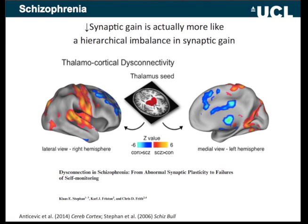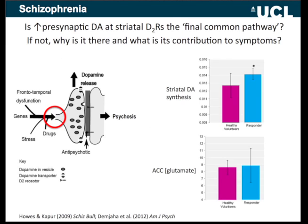It's worth bearing in mind the point put forward by Oliver Howes and Shitij Kapur that perhaps this frontotemporal dysfunction, along with other genetic factors, stress, and drugs, might all contribute to increased dopamine synthesis — although why this should be on a neurobiological or computational level nobody has a good idea. This increased dopamine release then leads to psychotic symptoms, which they propose is perhaps the final common pathway of psychosis.